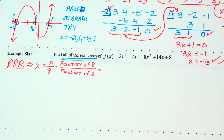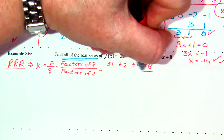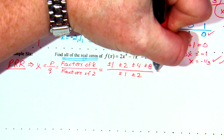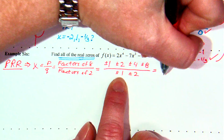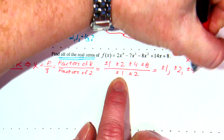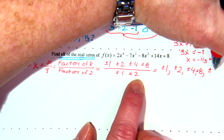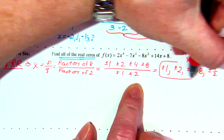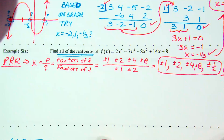Factors of 8: 1 times 8, 2 times 4. So plus or minus 1, plus or minus 2, plus or minus 4, plus or minus 8. Factors of 2: 1 and 2. Take turns putting everything over the denominator. Everything over 1: 1, 2, 4, 8. Everything over 2: 1 over 2 is 1 half; 2 over 2 is 1 — already got it; 4 over 2 is 2 — already got it; 8 over 2 is 4 — already got it. No need to relist. So PRRs: plus or minus 1, 2, 4, 8, and plus or minus 1 half.